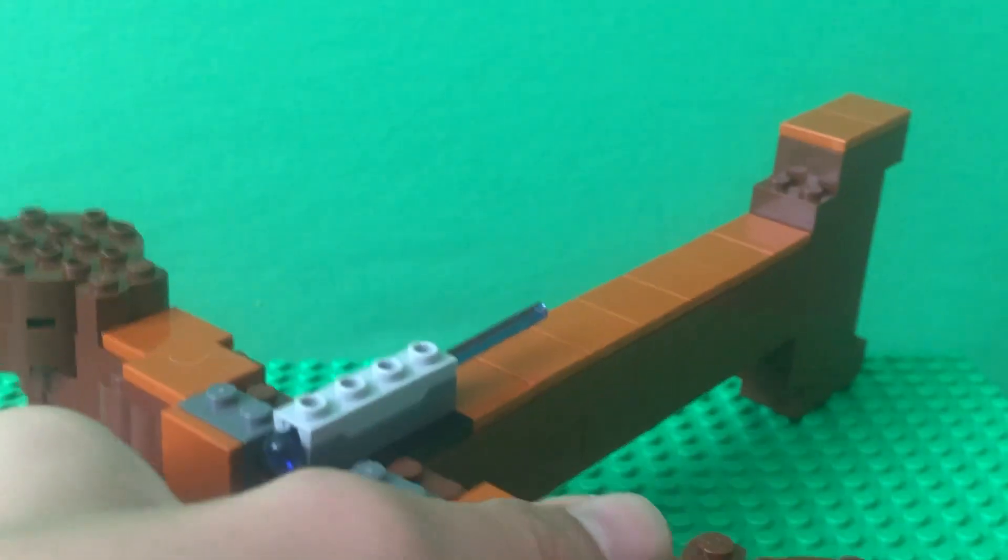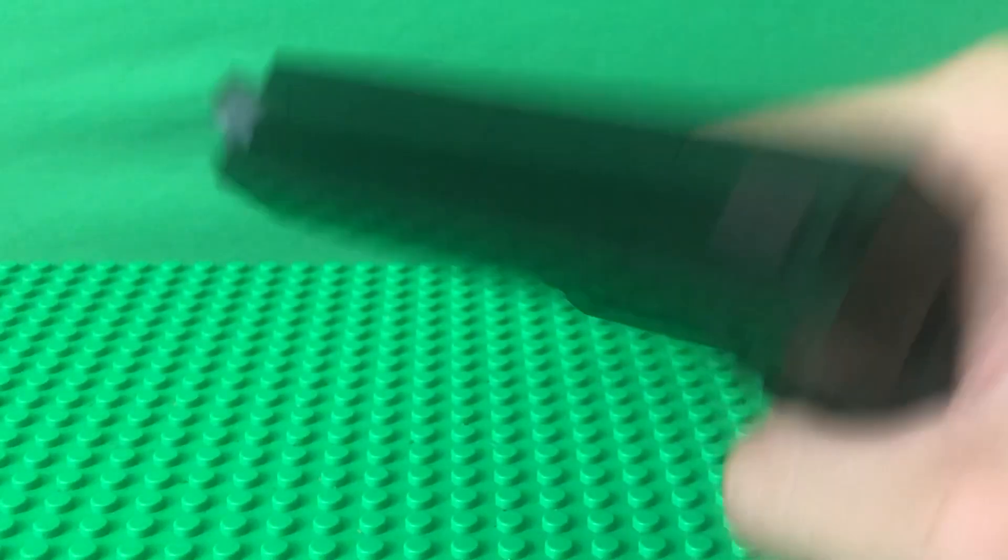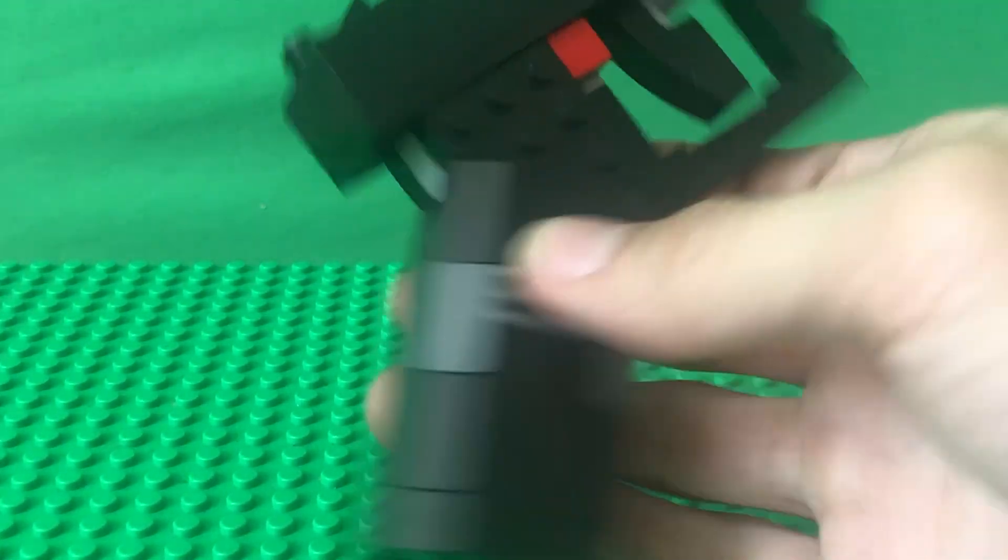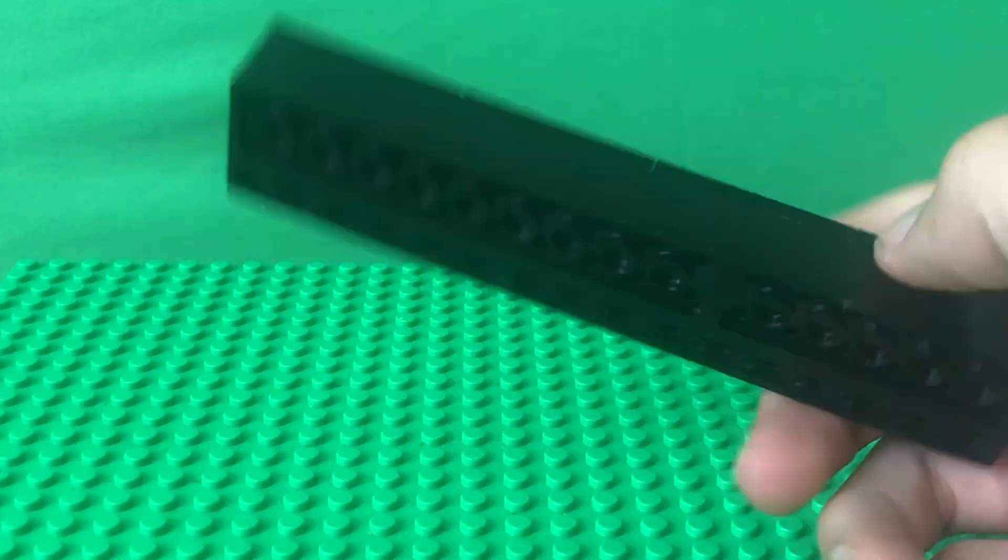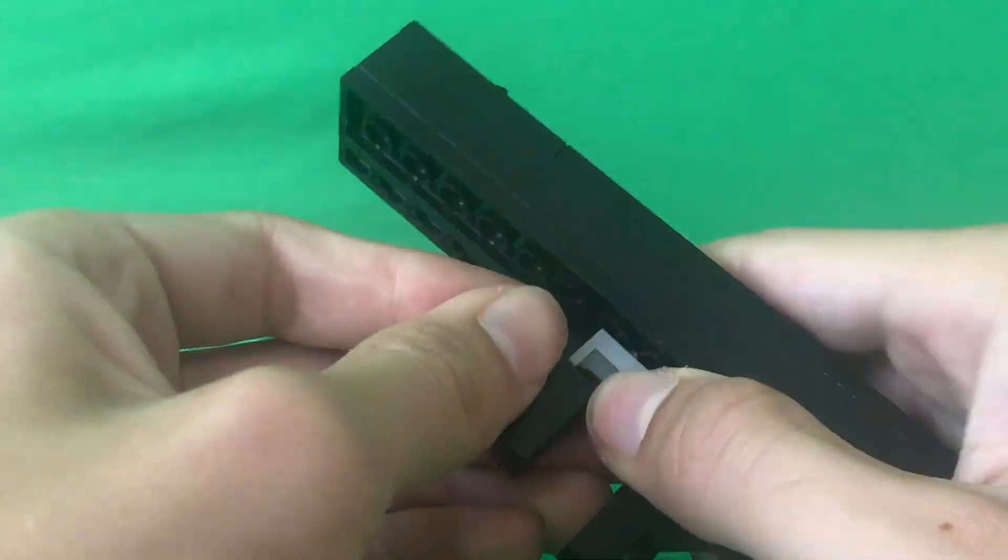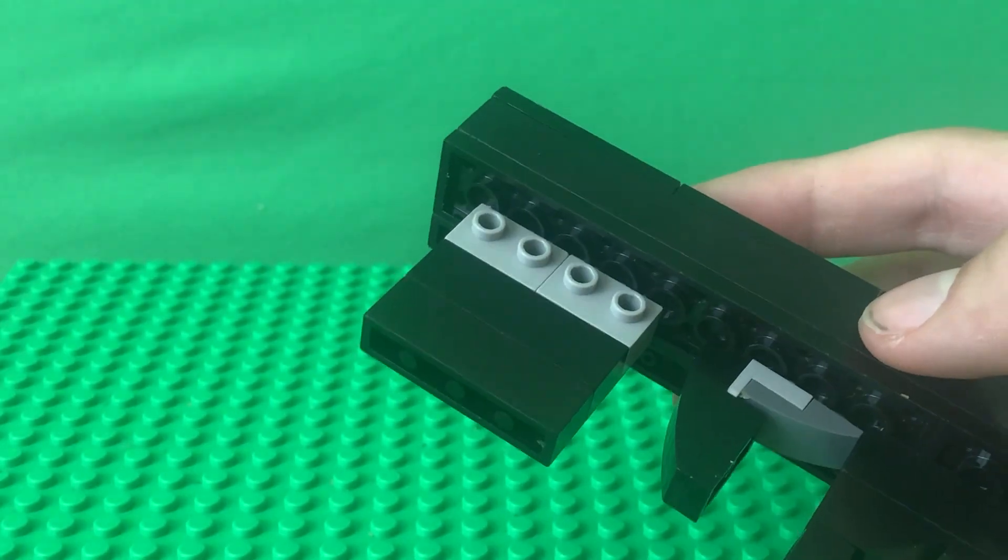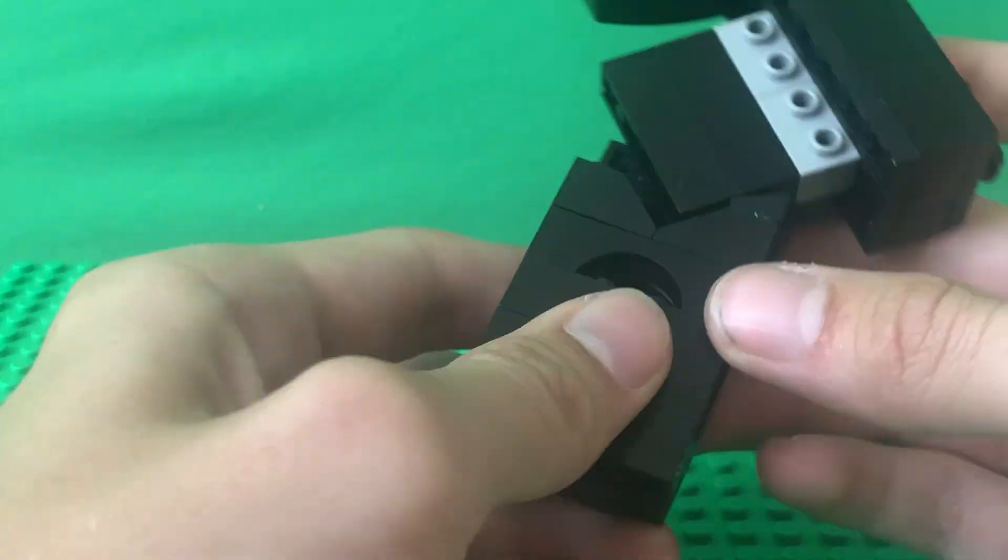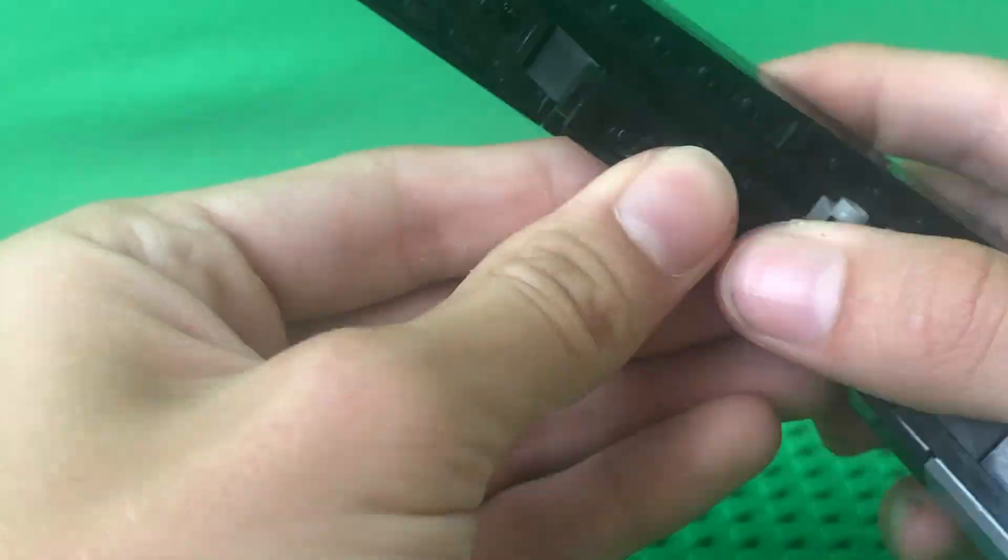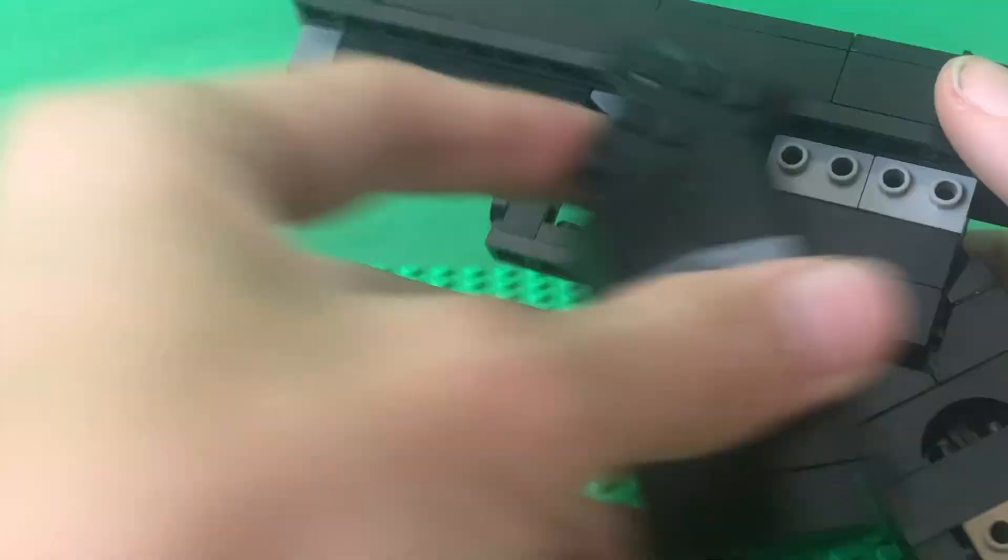And finally a realistic gun. The realistic gun was a really easy build and looks pretty good. Only one problem though. I'm trying to get a job at the Lego store and the Lego group doesn't approve of modern weaponry. So I have to get rid of this.